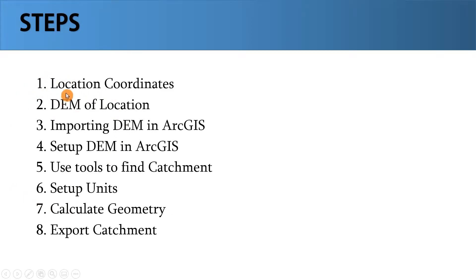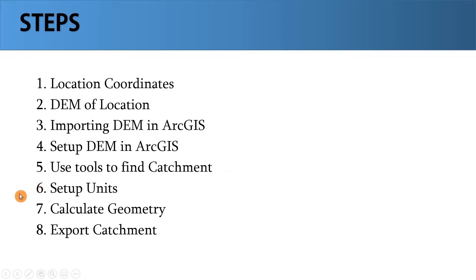We're going to start with the coordinates of our location, then move towards creating a digital elevation model of our location, then import that into ArcGIS. After importing, we'll set up the DEM, use the tools to find the catchment area, adjust the units, calculate the area, and then export it wherever we want. So these are the steps — let's start.